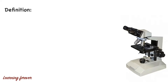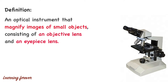First, we will see the definition. A compound microscope is an optical instrument that magnifies the image of a small object, consisting of an objective lens and an eyepiece lens. Simple microscope contains a single lens, whereas compound microscope consists of two lenses — objective lens and eyepiece lens. As a result, compound microscope has much more magnification compared to simple microscope and we can see a bigger image of the object.